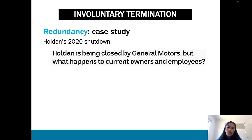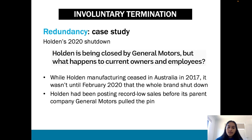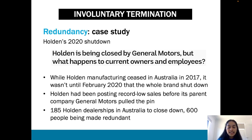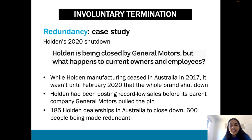A redundancy case study is Holden's 2020 shutdown. Holden was closed by General Motors. While Holden manufacturing ceased in Australia in 2017, it wasn't until February 2020 that the whole brand shut down after posting record losses and low sales. 185 dealerships closed and 600 people were made redundant. Remember: case studies must be within the last four years, or you will receive no marks.